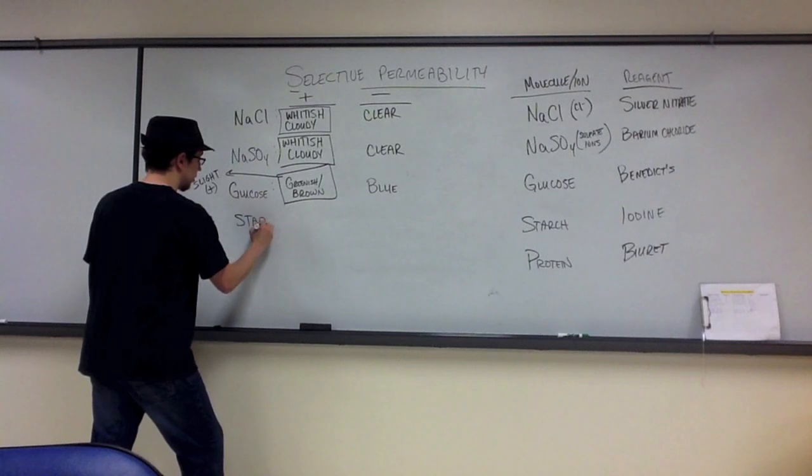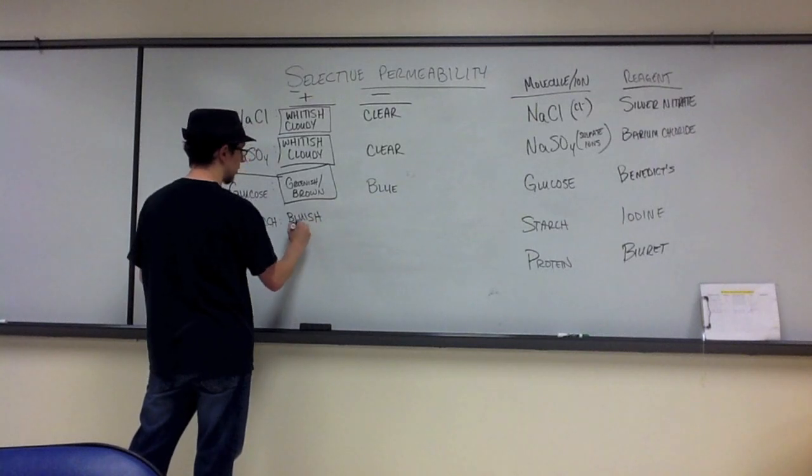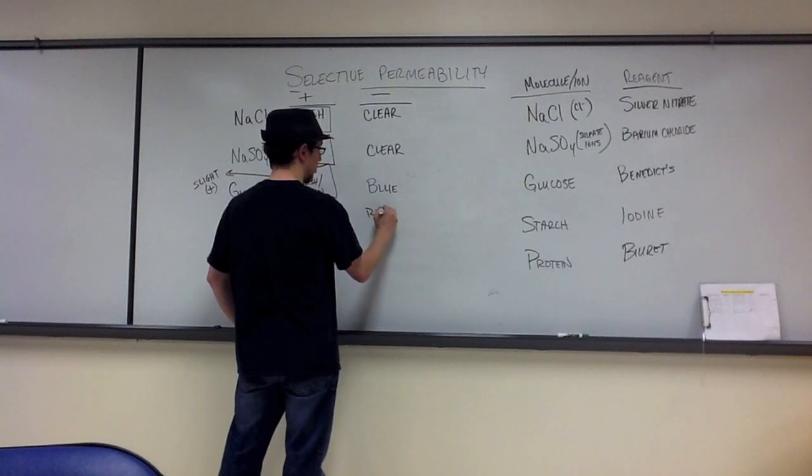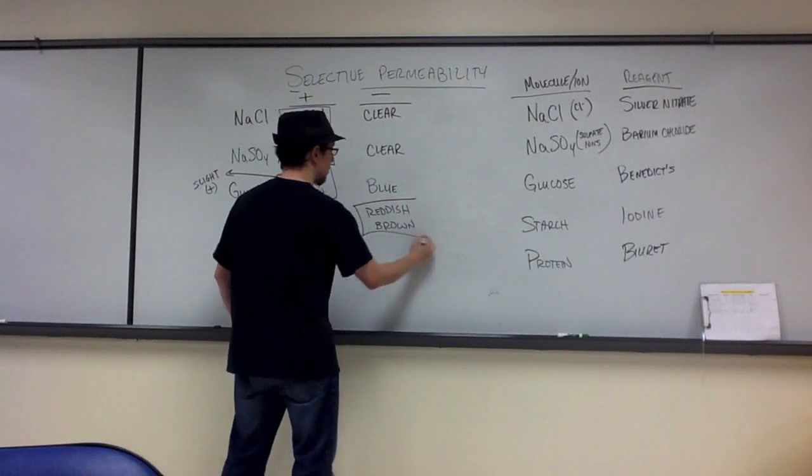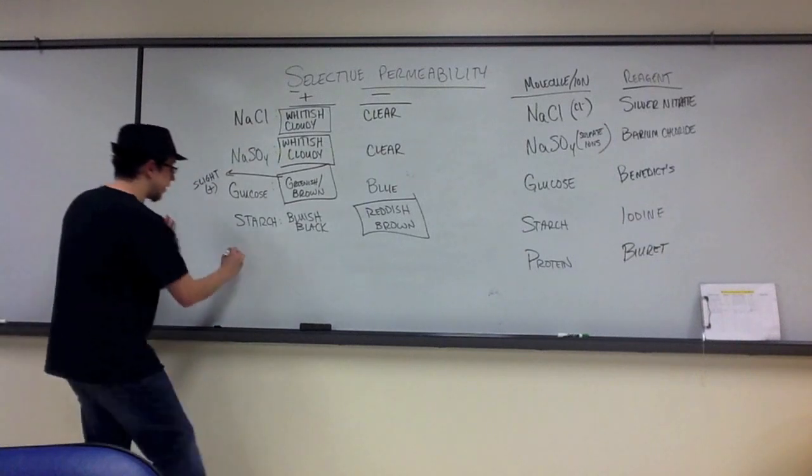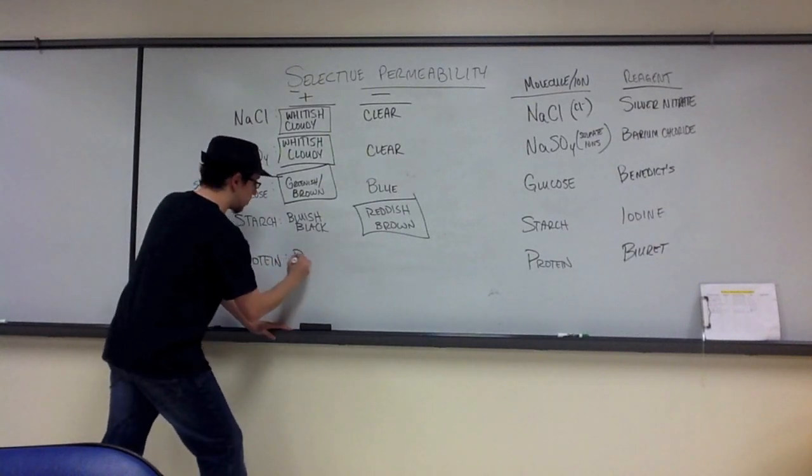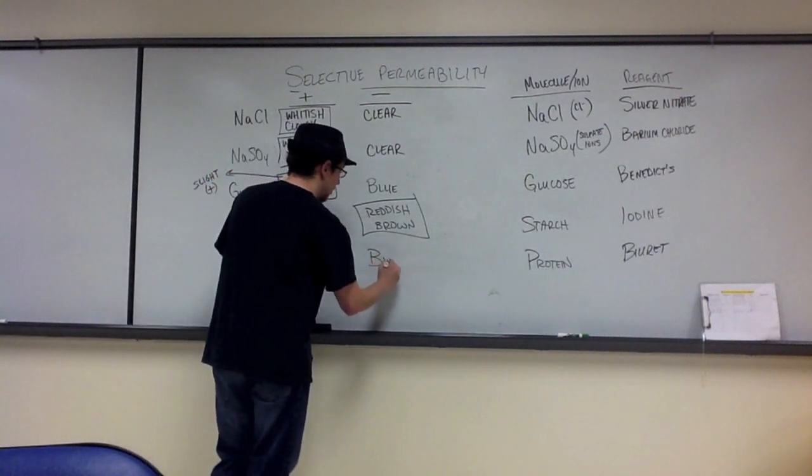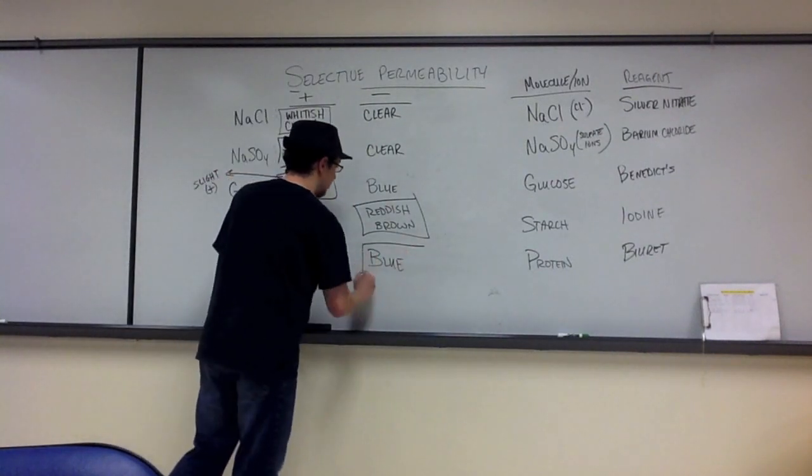And then finally, for our starch, we expect to either see a bluish-black if we have positive starches present, or we expect to see kind of a reddish-brown, the iodine, if it is not present in the beaker. Starch could not permeate the bag, so we expect to see reddish-brown for the negative result. Finally, with protein, the addition of that biorette, we expect to see purple if protein did permeate the bag and is present in the beaker, or we expect to see blue if protein was not able to permeate the bag and did not wind up in the beaker, and we wound up seeing blue.